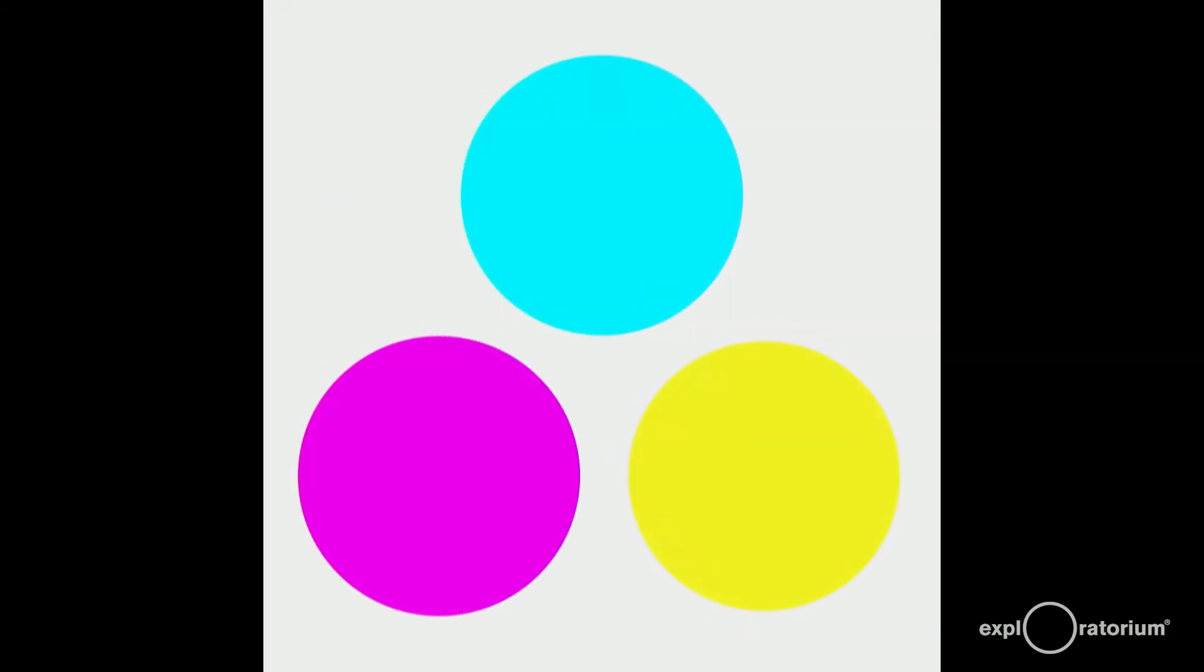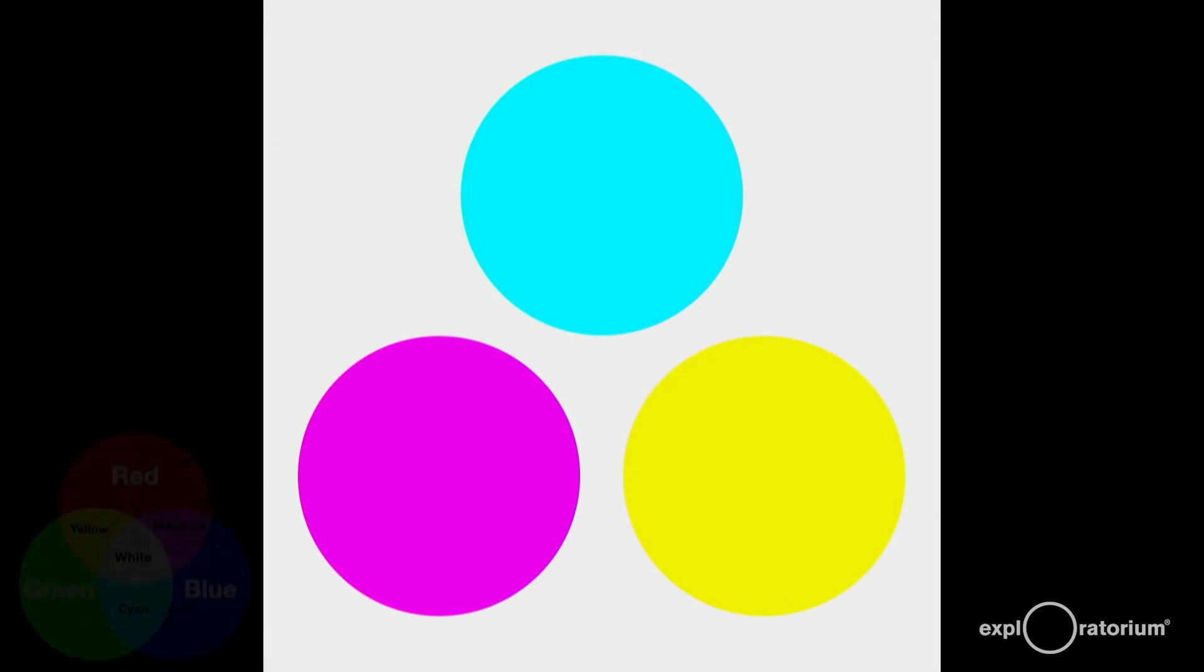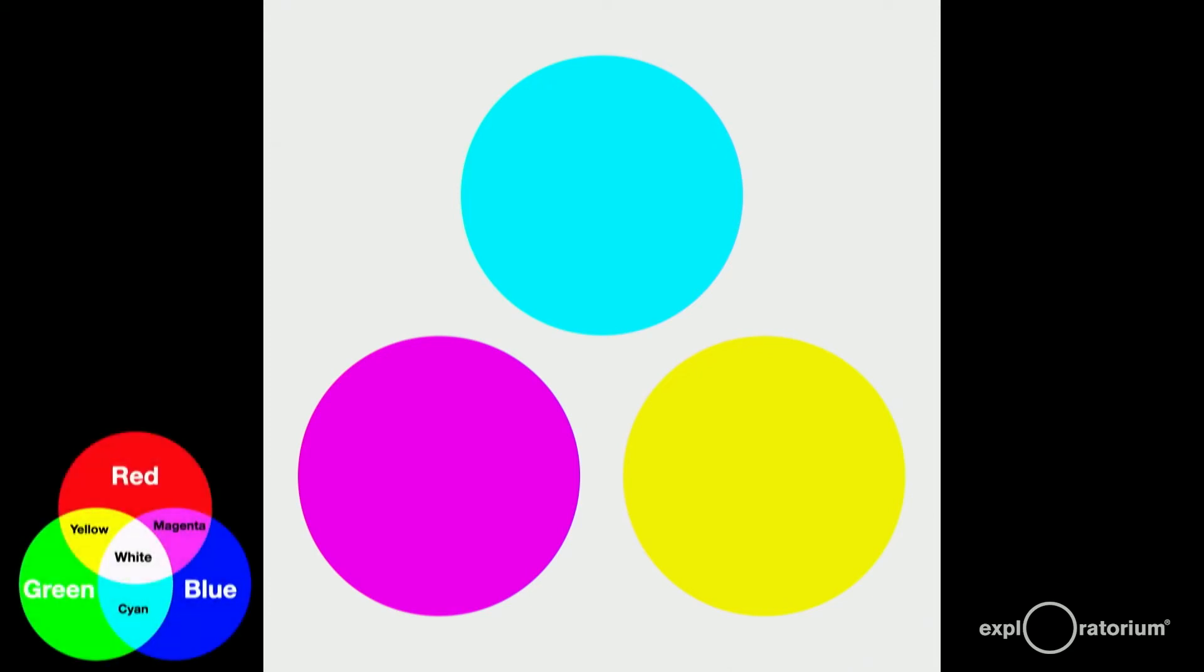The primary colors for subtractive color mixing are cyan, magenta, and yellow.